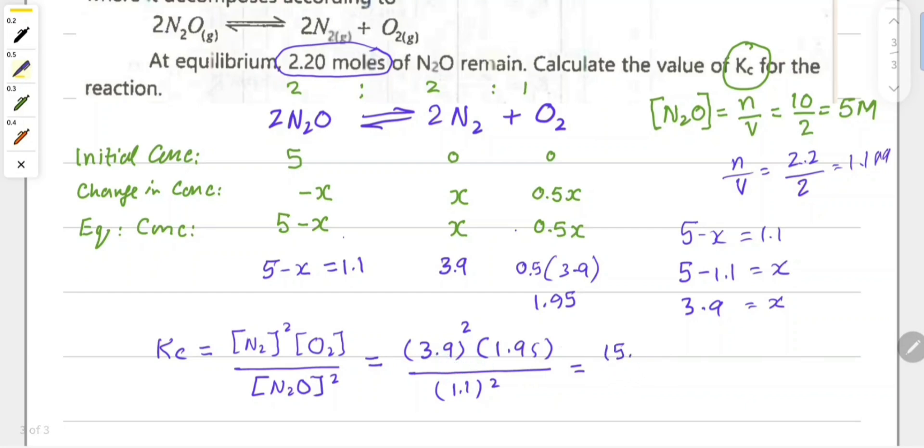Solving further: 3.9 squared equals 15.21, multiplied by 1.95, divided by 1.1 squared which equals 1.21. Multiplying these gives us Kc value of 24.49. This is the equilibrium constant value at this temperature. This is the solution for this type of problem.